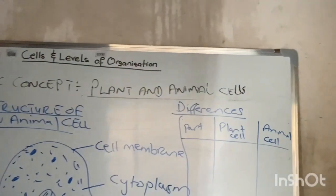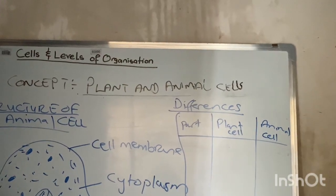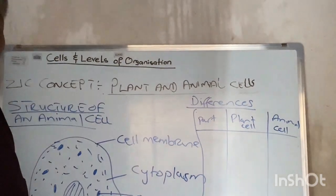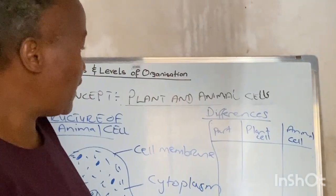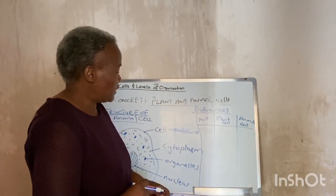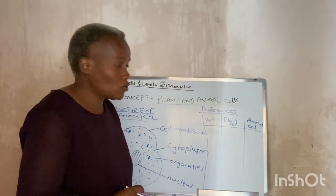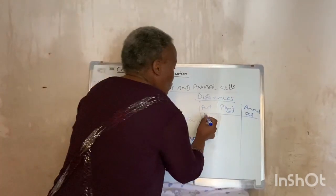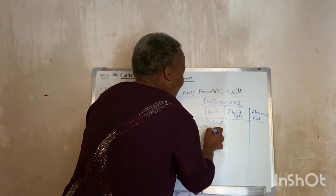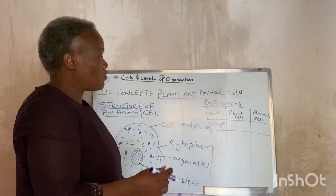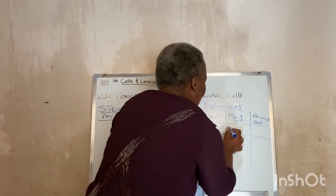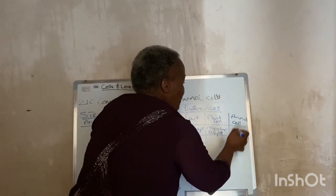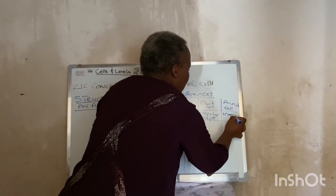To make the information easier to read and a bit clearer, it's much easier to present that information in table form. This is a table of differences between plant and animal cells. We want to look at the components where these cells are different. Starting with their shape: a plant cell has a regular shape because of the cell wall, but that of an animal cell is irregular.